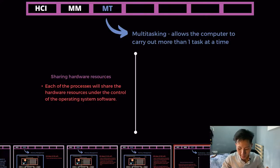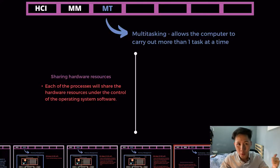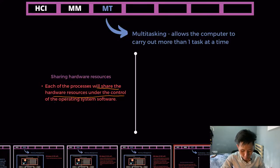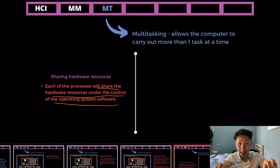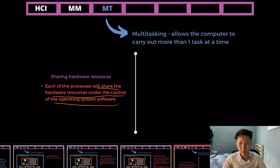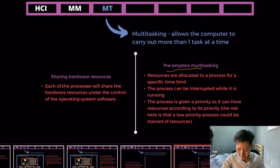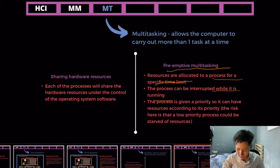The third function of the OS is to allow multitasking. How does the OS ensure multiple applications can be open at the same time — for instance, YouTube and a game simultaneously? Each process shares hardware resources under the control of the operating system. The OS allocates different hardware resources like RAM and CPU processing power to each running process to ensure no program will crash.